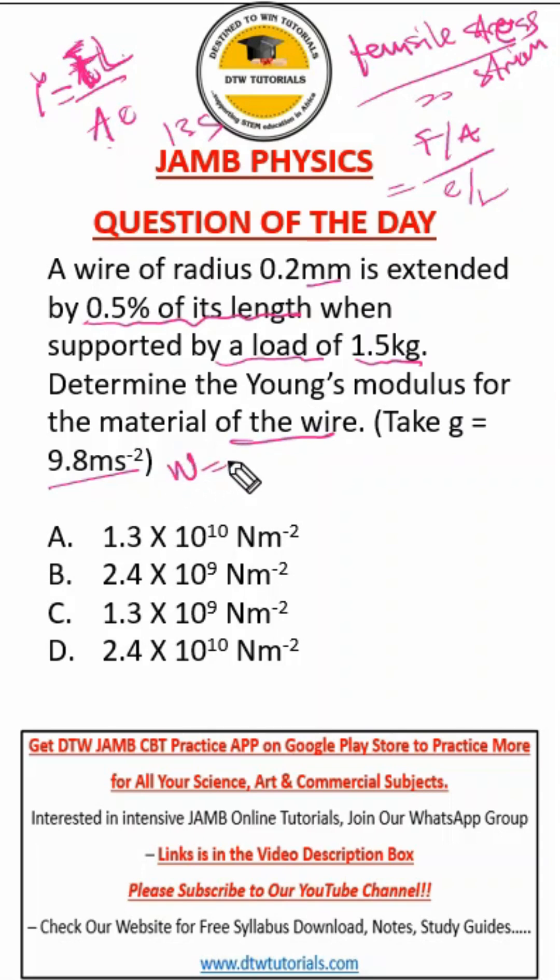So next thing now, we have to figure out all these values for your force which is the weight W. Remember W is MG because this load is working under gravity. So that will be 1.5 times 9.8, which gives us approximately 15 Newtons.